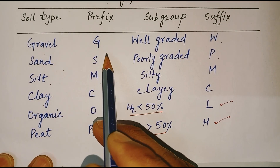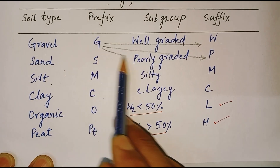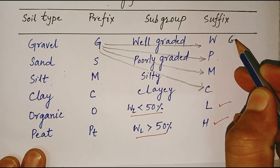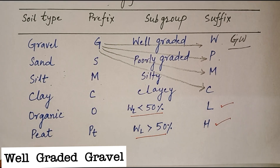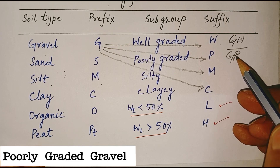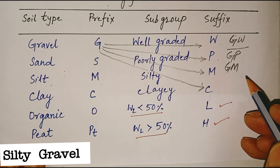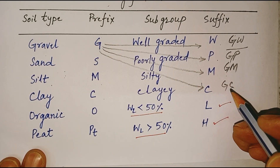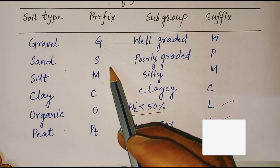Both gravel and sand are divided into four subgroups. GW means well graded gravel — a gravel-sand mixture with little or no fines. GP means poorly graded gravel — a gravel-sand mixture with little or no fines. GM means silty gravel — a poorly graded gravel-sand-silt mixture. GC means clayey gravel — a poorly graded gravel-sand-clay mixture.